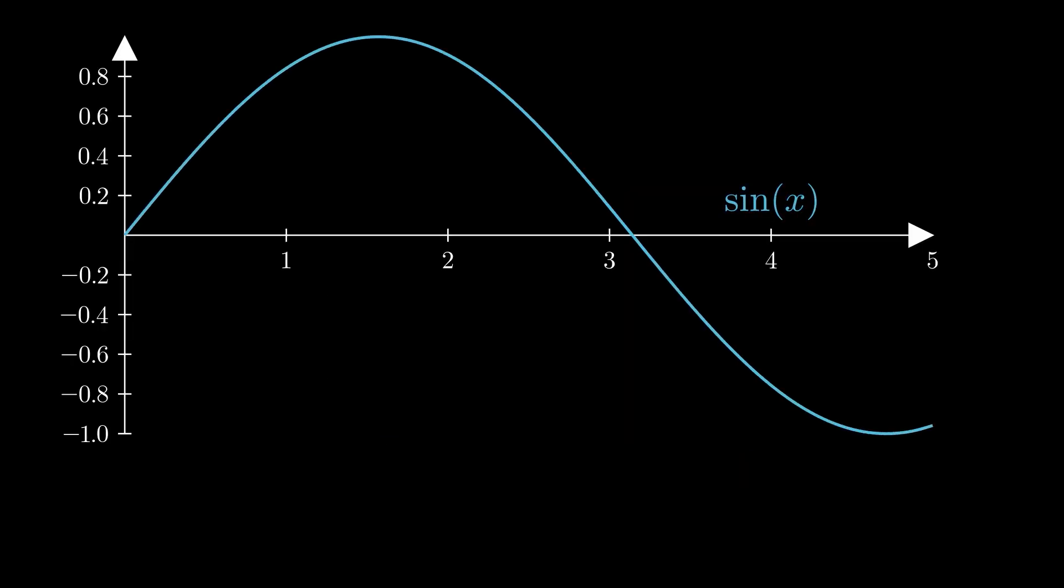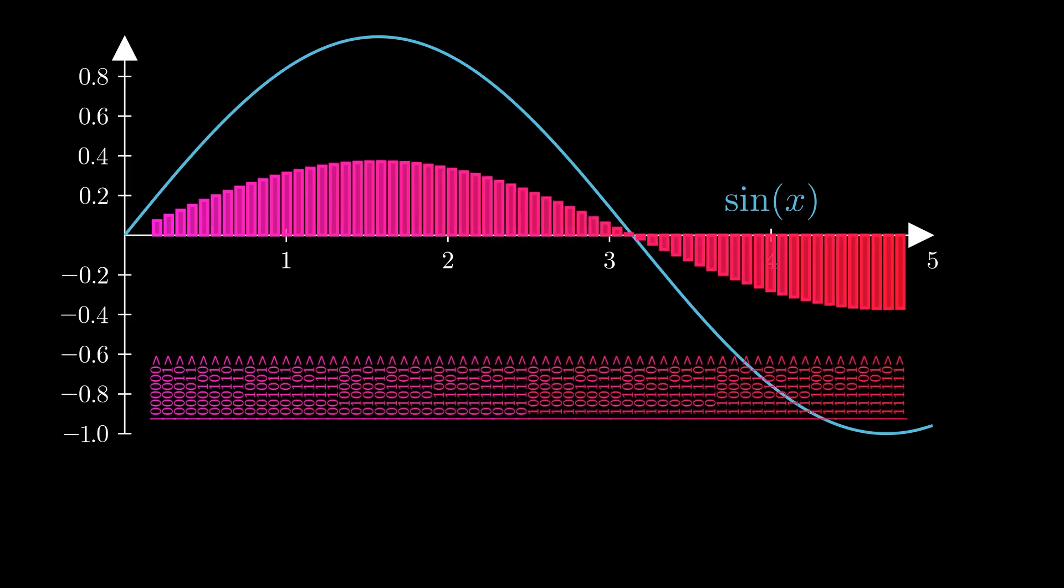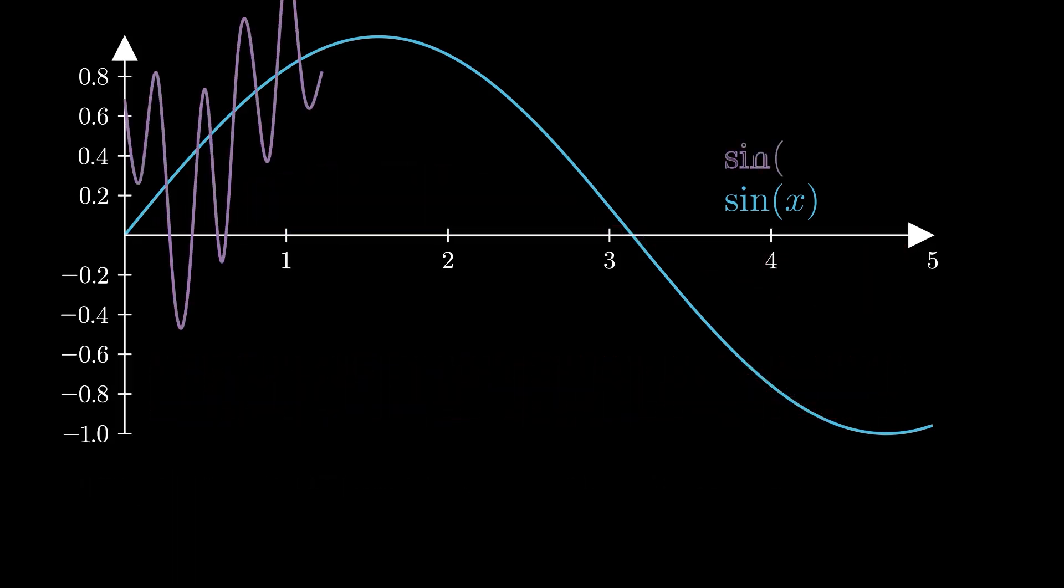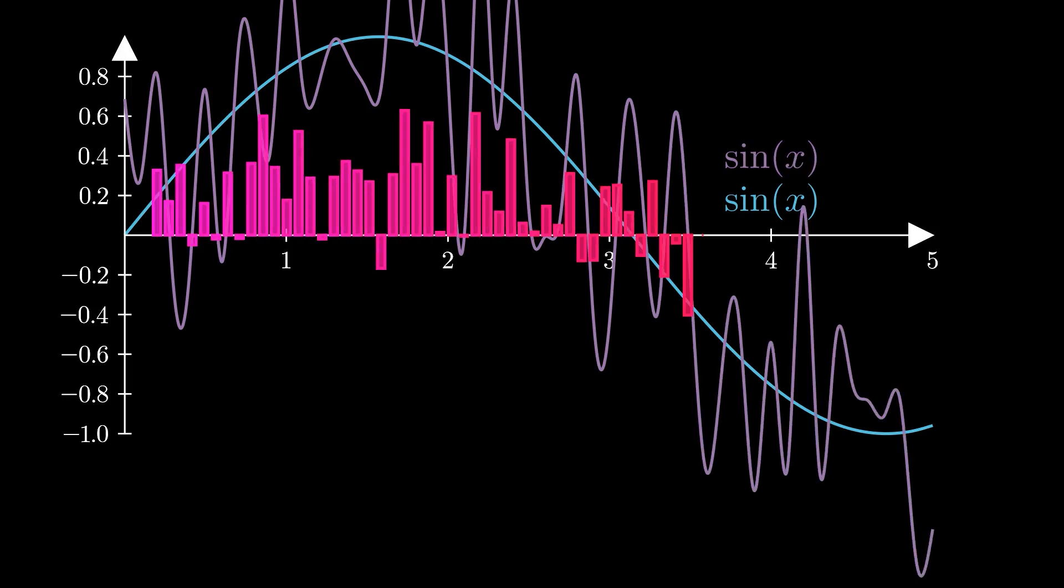Well, first we'll use quantum amplitude encoding to encode the digital signals for both the template and the real signal from the black holes into our quantum computer's qubits. This involves preparing quantum states where the amplitudes of the states represent the signal values. The encoding can be complex and often requires optimization techniques to ensure efficient representation of the signals.